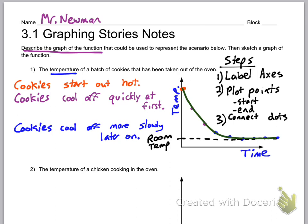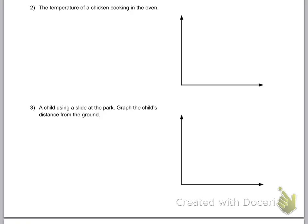Lastly, we connected the dots because in this situation, it's continuous. All these graphing stories, almost all of them will be continuous functions. All right. Let's do another one here. We're going to do the temperature of a chicken cooking in the oven.